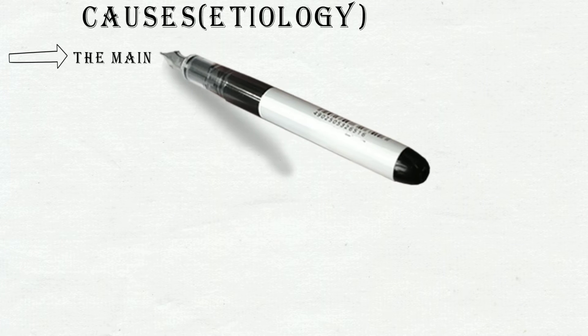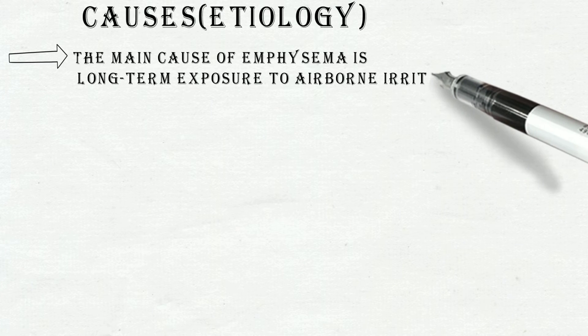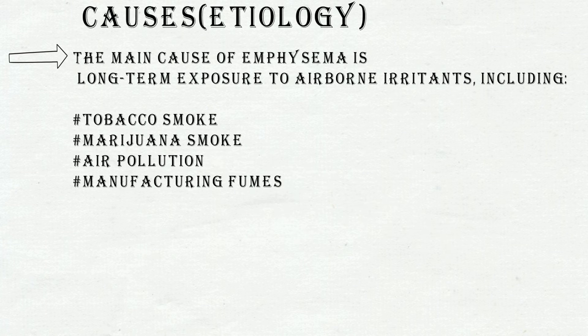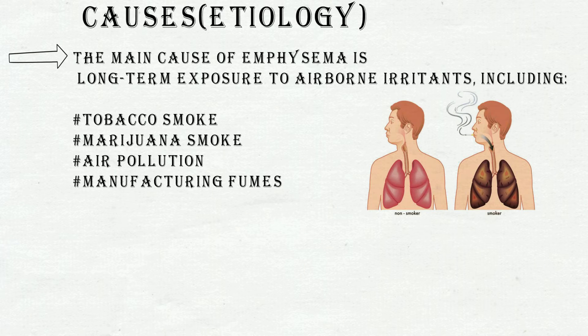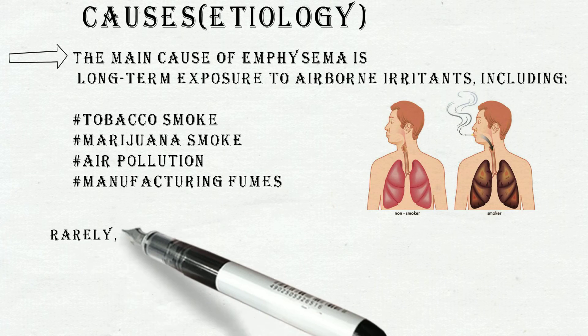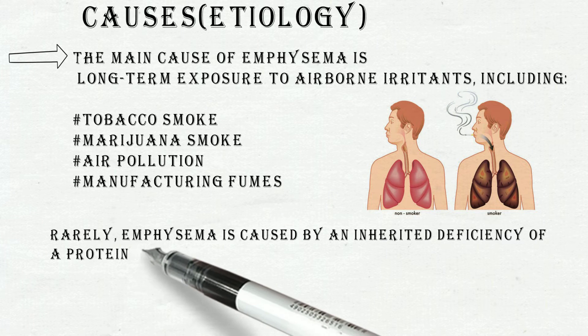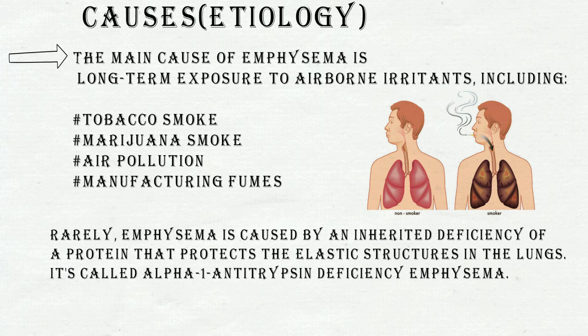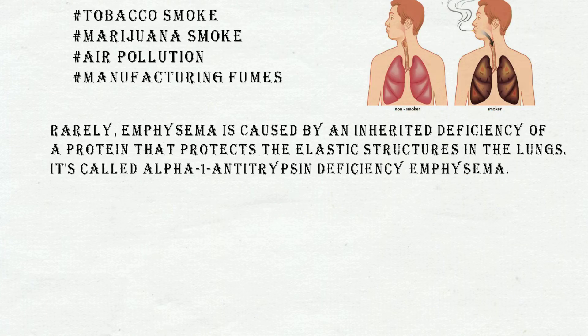Emphysema causes — etiology. The main cause of emphysema is long-term exposure to airborne irritants, including tobacco smoke, marijuana smoke, air pollution, and manufacturing fumes. Rarely, emphysema is caused by an inherited deficiency of a protein that protects the elastic structures in the lungs. It is called alpha-1-antitrypsin deficiency emphysema.